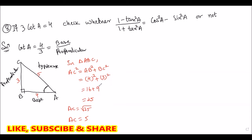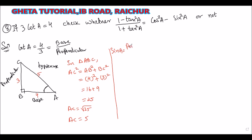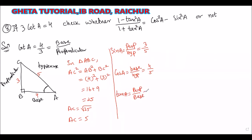According to the question we need to find tan A, cos A, and sin A. So first, sin A = perpendicular / hypotenuse = 3/5. Then cos A = base / hypotenuse = 4/5. Then tan A = perpendicular / base = 3/4.